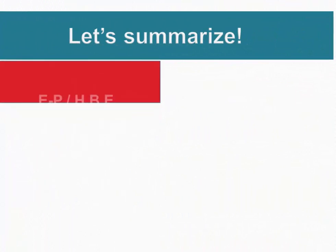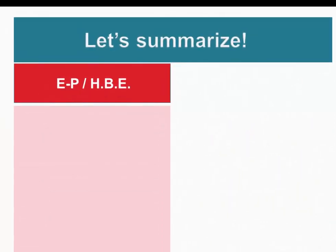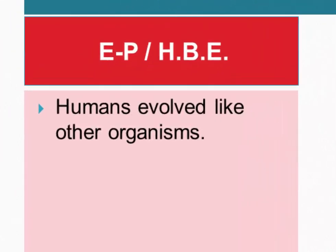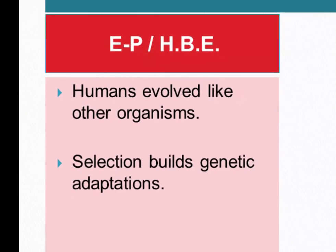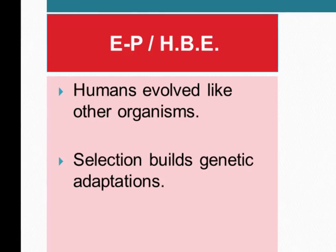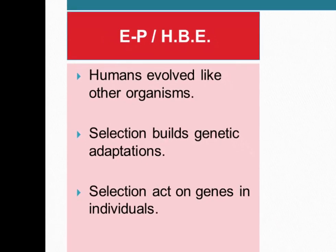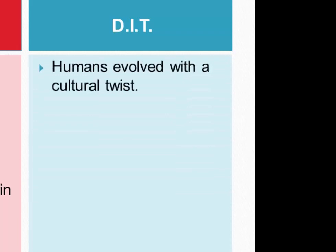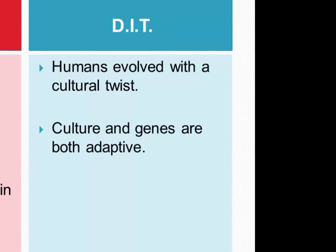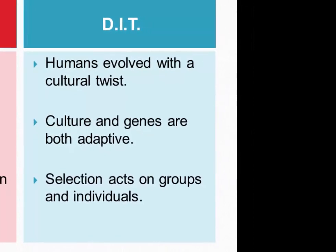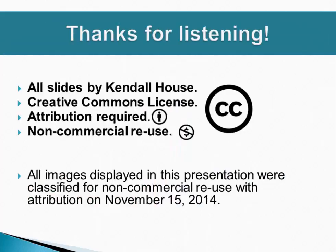Now let's summarize the differences between dual inheritance theory and evolutionary psychology and human behavioral ecology. The three core themes in these approaches are that humans evolved just like other organisms, that selection builds primarily genetic adaptations, and that selection acts on genes and individuals. Dual inheritance theorists, in contrast, argue that humans evolved with a cultural twist and that culture changes the character of human evolution in some ways. They argue that culture and genes are both adaptive and can also be maladaptive, and that selection acts on both groups and individuals. Thank you for listening.